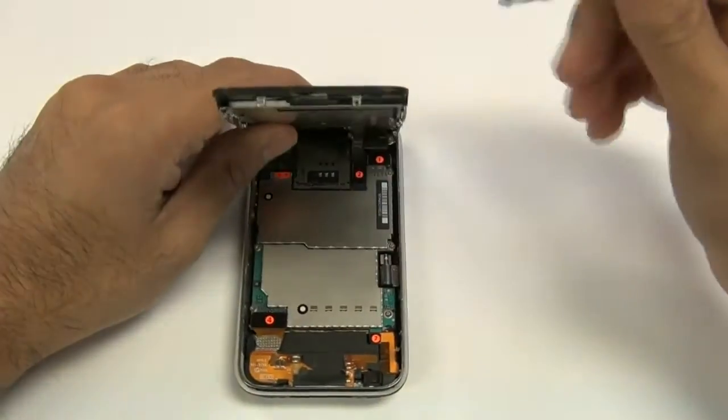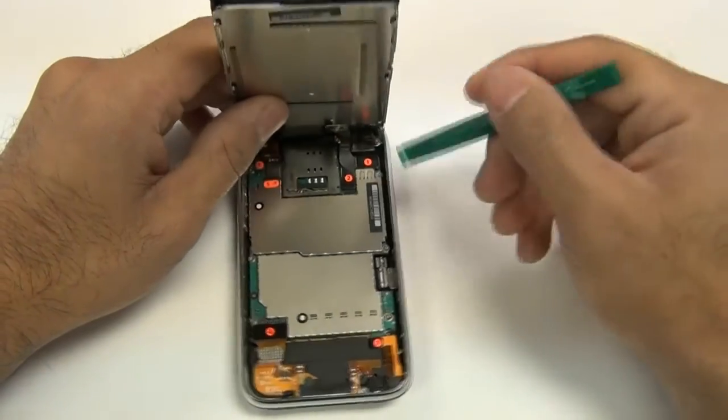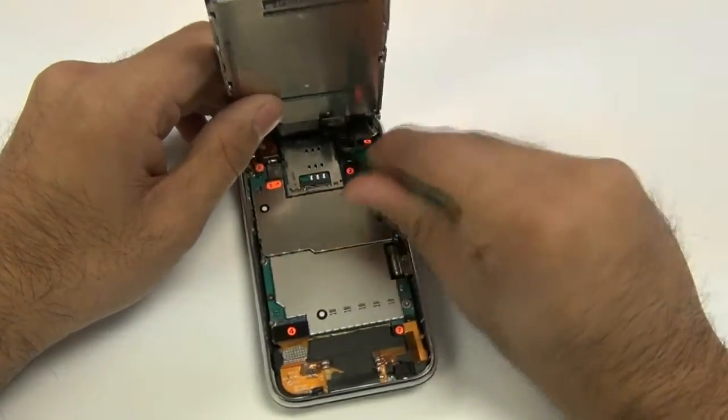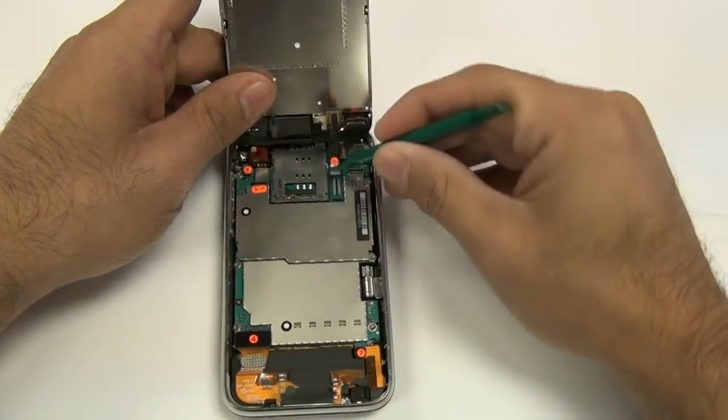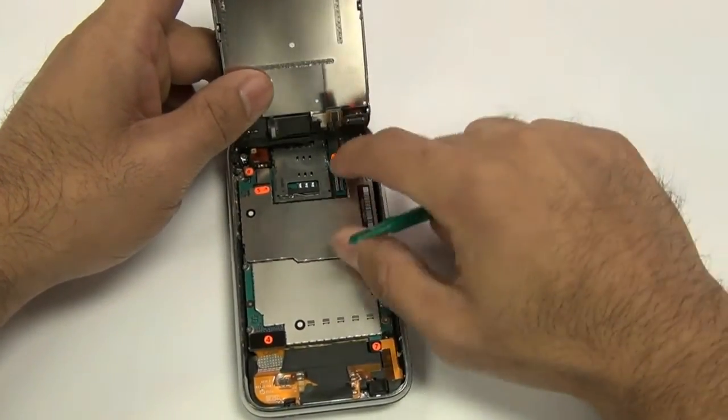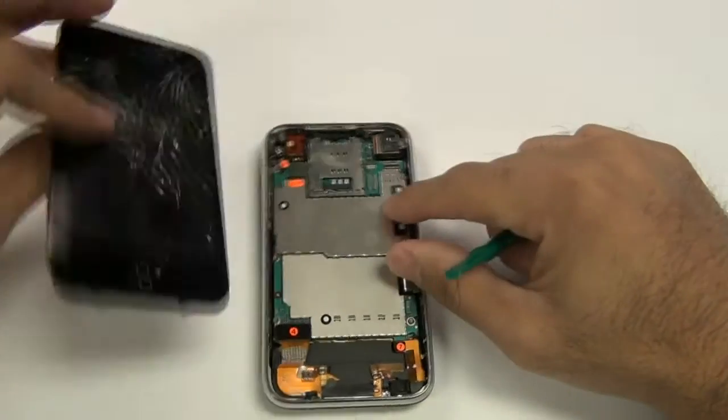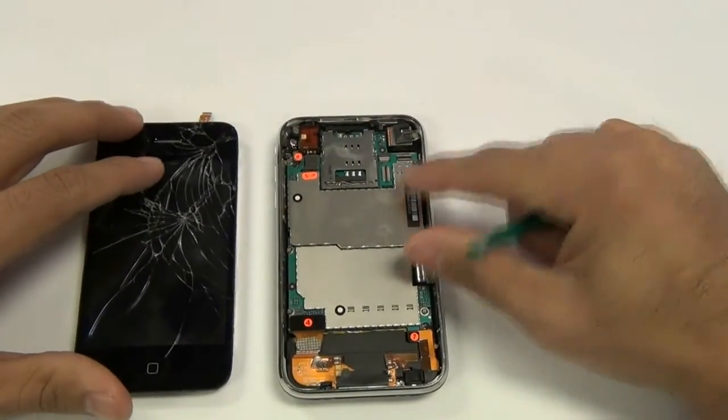Using a safe pry tool, remove these cables starting with cable 1, the LCD flex cable, then cable 2, the digitizer flex cable. Cable 3 is held in with a jawbone connector which needs to be flipped up before you can pull the cable out.